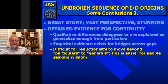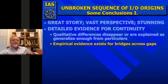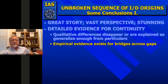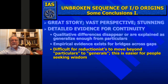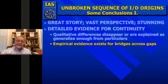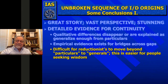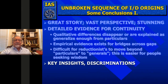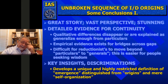Empirical evidence exists for the bridges across the gaps—this is a really important one. Most scientists only work on one gap, like Miller-Urey for the spontaneous origins of monomers and biopolymers from early Earth conditions. That's why I call it 'unbroken' in the first place. There's a systems emphasis here: it's difficult for the reductionist to move beyond the particulars to the generals—they're not allowed to in the scientific method—but it's easier for systems people who are seeking universals.